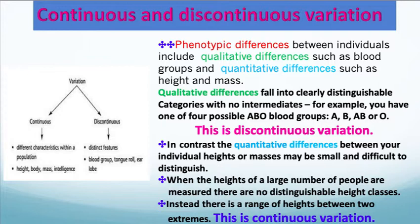Phenotypic differences between individuals include qualitative differences such as blood groups and quantitative differences such as height and mass. Qualitative differences fall into clearly distinguishable categories with no intermediate or range. For example, you have one of four possible ABO blood groups — you're either A, B, AB, or O. This is called discontinuous variation.